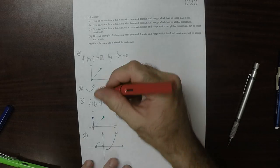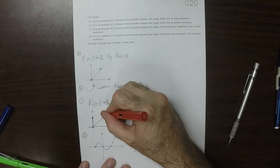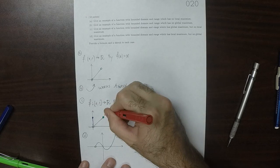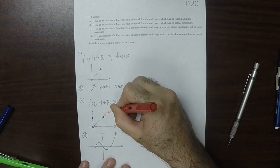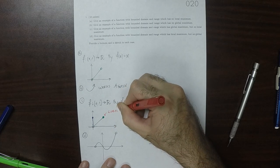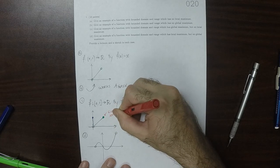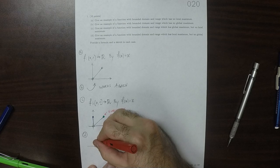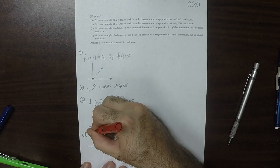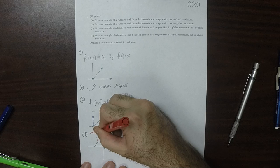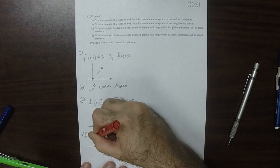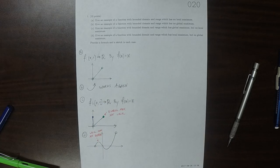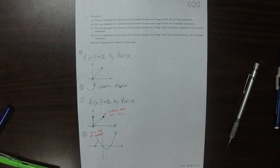To label all of these things, this point right here would be global max. It's not local. And then this one here would be a local max. It's not global. And so the only point is that now I have to come up with a formula for this.